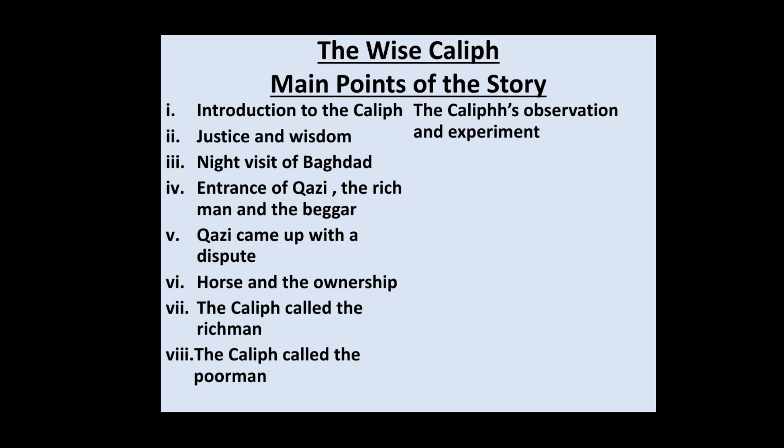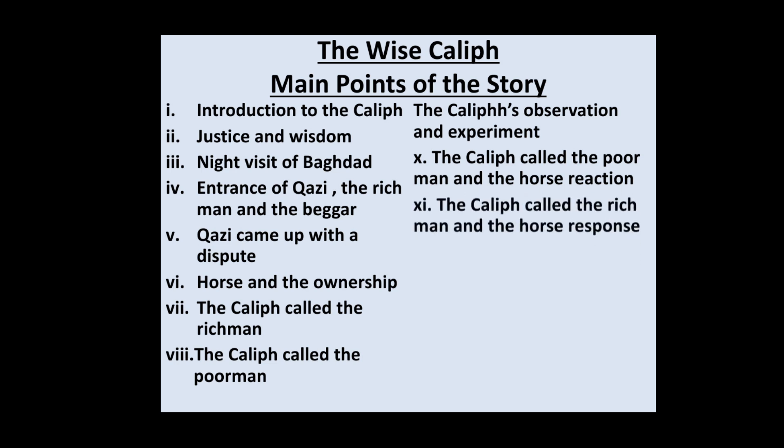After hearing both stories, the Caliph said this was not a very difficult case and he could solve it easily. The wise Caliph asked the beggar to come forward and touch the horse. When the beggar touched it, the horse did not feel good and winced at his touch. Then the Caliph asked the rich man to come and touch the horse, and the horse felt pleasure at his touch.